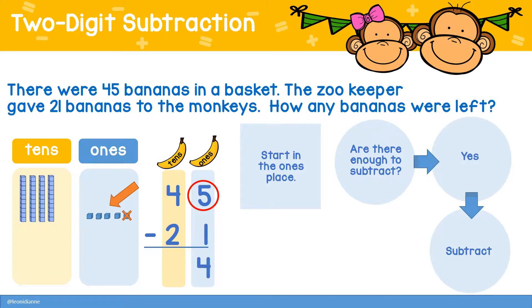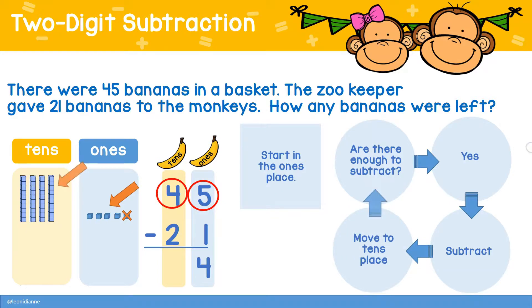Next, move to the tens place and repeat the process. Are there enough tens to subtract? There are. Subtract four minus two and the answer is two. There are 24 bananas left.